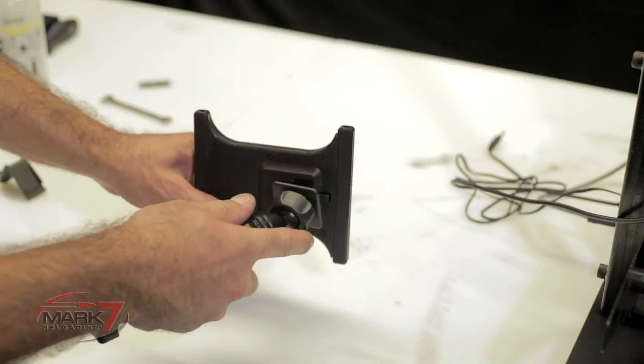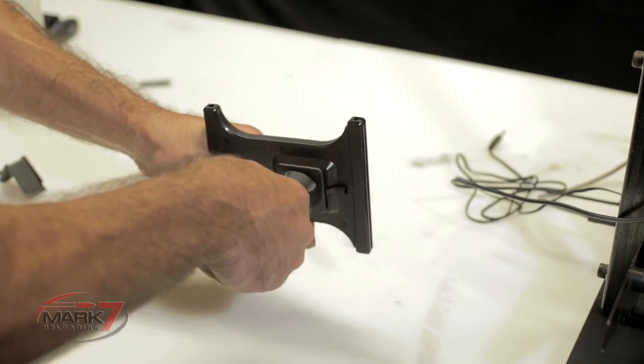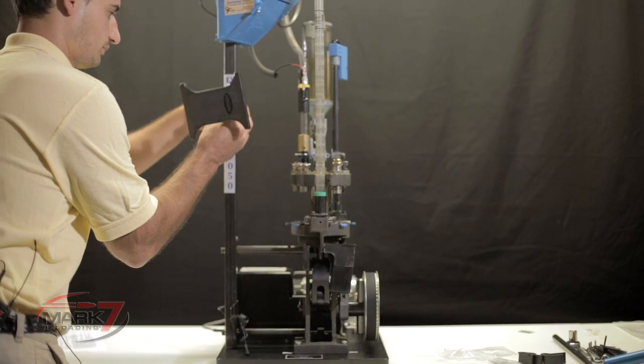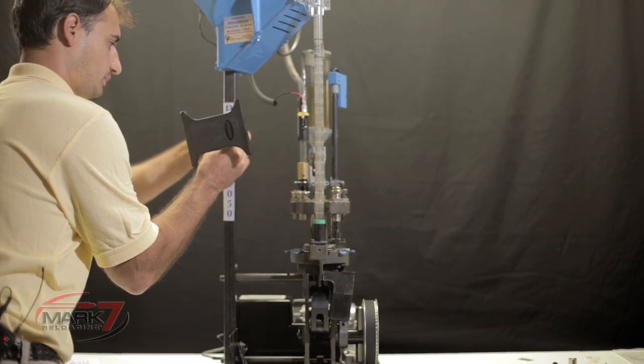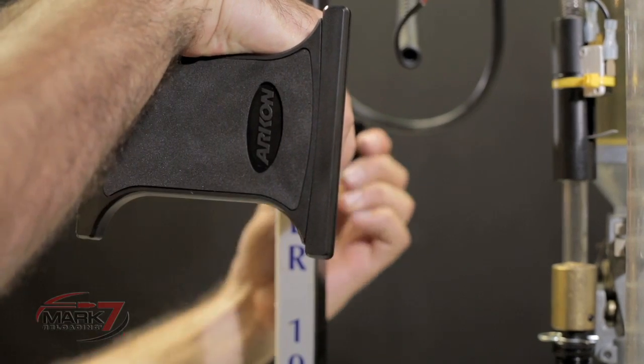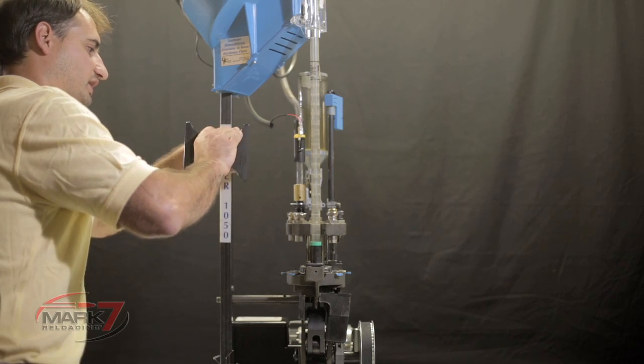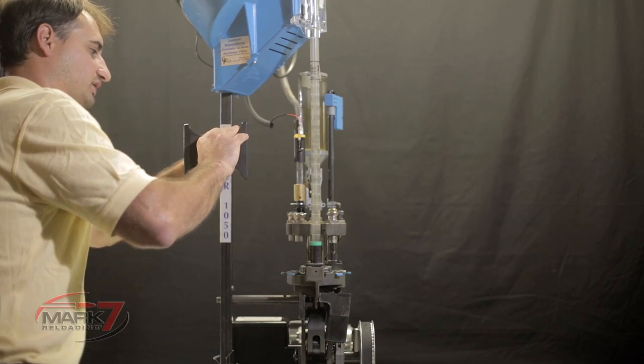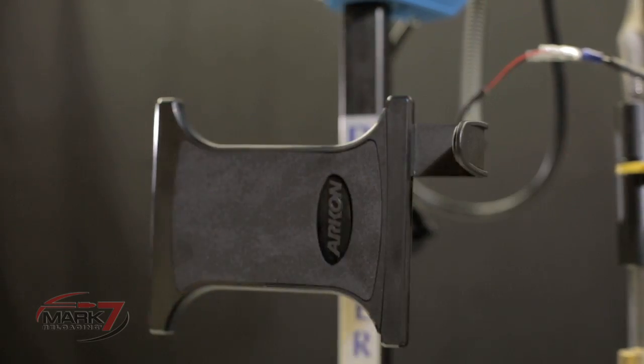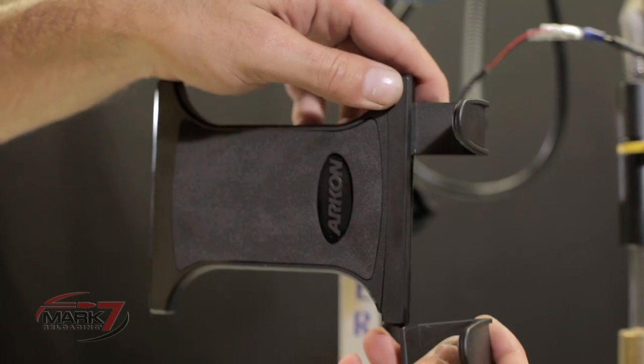Next we're going to mount the tablet holder to the Dillon case feeder pole. There's a nut on the back of the holder. You can use it to secure it at the angle and the orientation that you prefer. Next the sides of the holder are inserted.